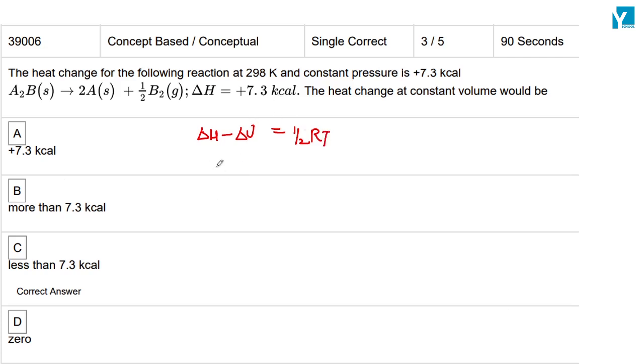Now, we have delta U equals delta H minus half RT.